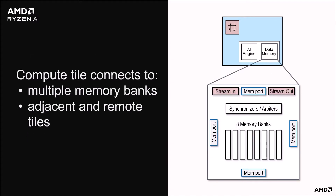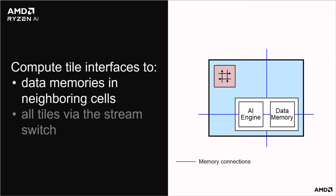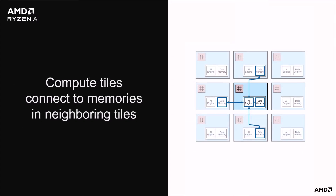Each compute tile has a 4-port data memory with north, south, east and west ports. The memory's west port is connected to the AI engine in the same tile. The other three ports are connected to the AI engines in neighboring tiles. There are also stream interfaces which are used to move data into and out of this memory from non-neighboring tiles. Each compute tile connects to other tiles in the array via its memory and stream connections. An AI engine in a compute tile is connected to the data memory in its own tile and also the memory of its three nearest neighboring tiles. A single AI engine can access four times its data memory for its own application, or neighboring AI engines can access each other's data memory for data sharing and transferring results.